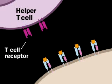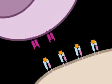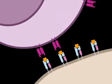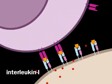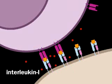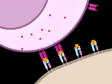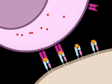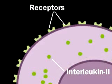A helper T cell can bind the displayed antigen if the T cell has surface T cell receptors that correspond to a specific antigenic determinant on the displayed antigen. Once the helper T cell has docked, the antigen-presenting cell releases interleukin-1, a cytokine that activates the helper T cell. The activated T cell now produces a different cytokine, interleukin-2, as well as cell surface receptors for IL-2.